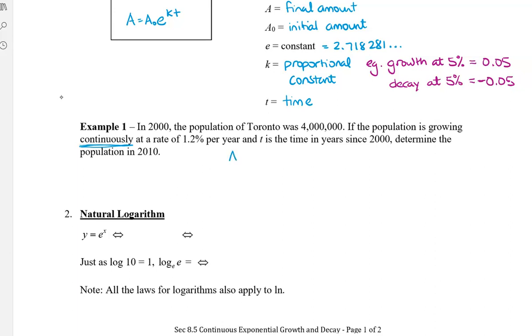It's growing continuously at a rate of 1.2% per year and t is the time in years since 2000, determine the population in 2010. So we're going to use the formula a equals a naught times e to the power of kt. So we want to know the final population. Our beginning population is 4 million times e to the power of k. Now k here is 1.2%, so we're going to put in 0.012 times 10. The 10 is from the fact that it's from 2010, sorry 2000 to 2010. We're going to assume that it's from the beginning of 2000 to the beginning of 2010, so that actually will be 10 years.